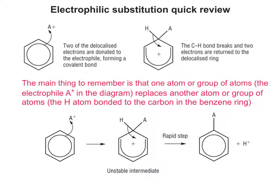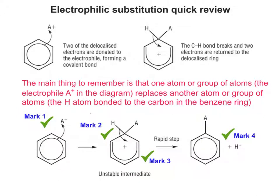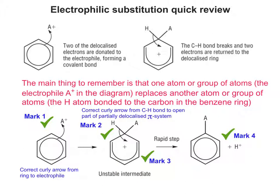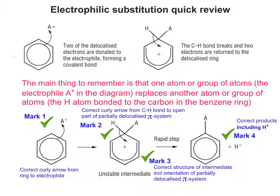I'm going to put a tick by all the places you get marks for — see if you can work out what the marks are actually given for. There are two marks in the middle and one mark on the other side within the whole mechanism. The first mark is for the correct curly arrow from the ring to the electrophile. The second is for the curly arrow correctly coming from the carbon-hydrogen bond to the open part of the partially delocalised pi system — the U-shape in this case. The third mark comes from the correct structure of the intermediate, including the correct orientation of the partially delocalised pi system with the open end pointing towards where substitution is taking place. The final mark comes from the correct products, including H+. Don't forget the H+, which was originally attached to the benzene ring.